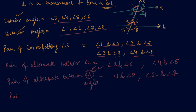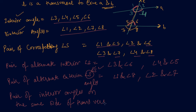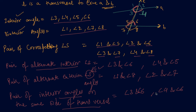Now let me write another type: pair of interior angles on the same side of the transversal. Earlier we discussed alternate interior angles; now we are discussing interior angles on the same side of the transversal, which means angle 3 and angle 5, and angle 4 and angle 6. I hope students you are pretty clear about all the different types of angles we have discussed.